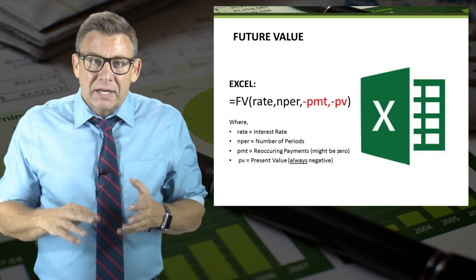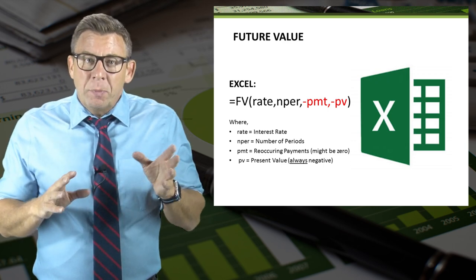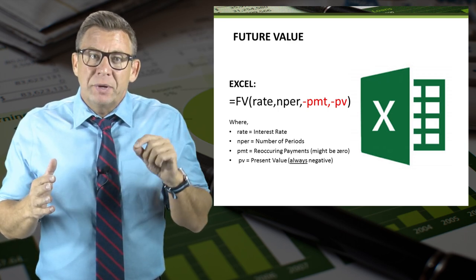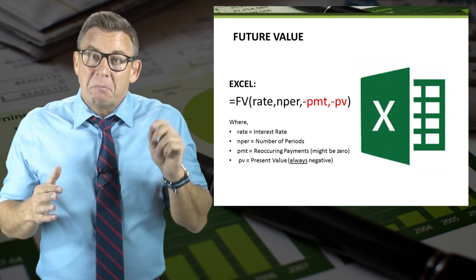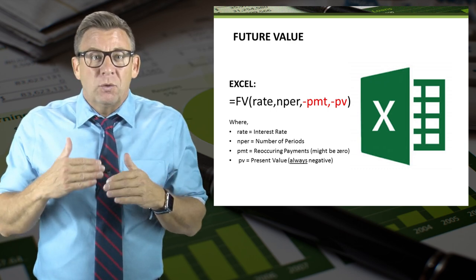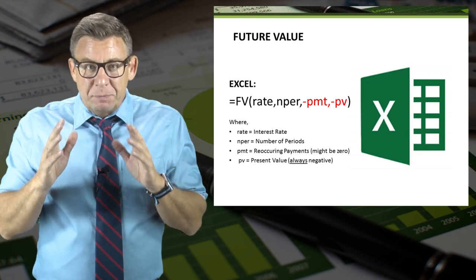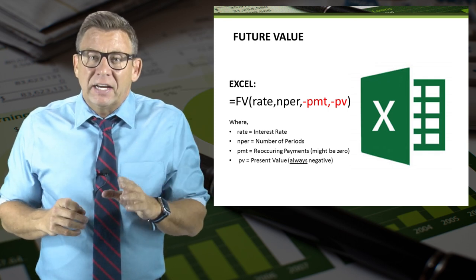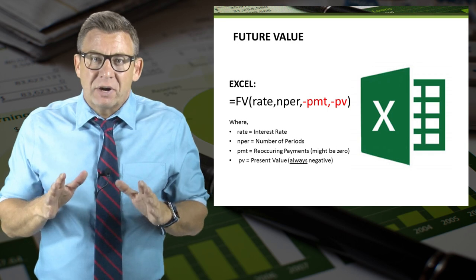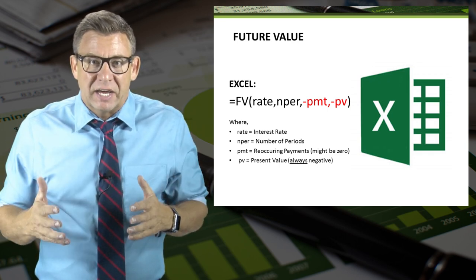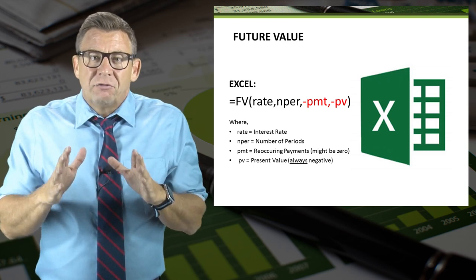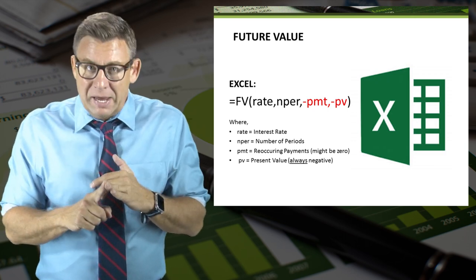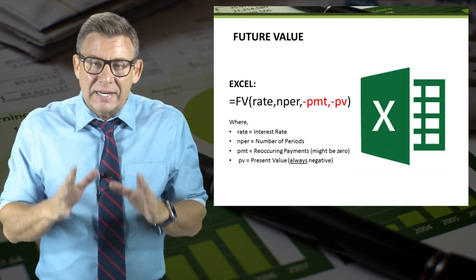The formula is equals FV, open parentheses, rate — which is the interest rate — nperiod — which is the number of periods — minus payment, which is a regular reoccurring amount. It's possible that this could be zero because not every scenario has a regular reoccurring amount. And finally, minus PV, which is the present value or the amount of investment today. When solving for future value in Excel, present value or payment is always a negative amount.